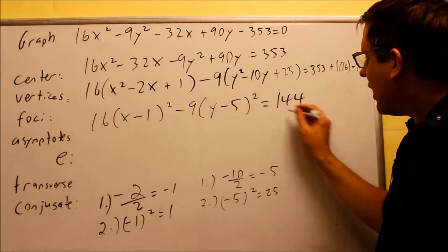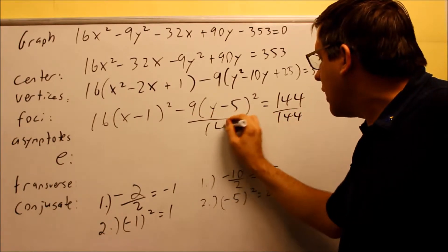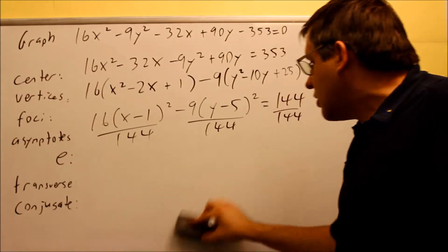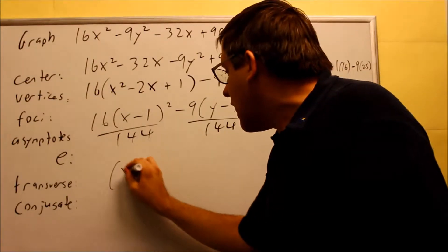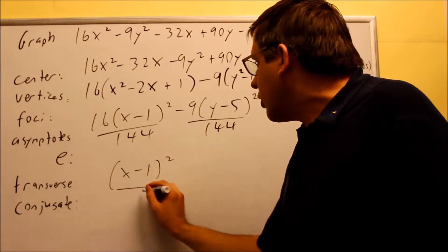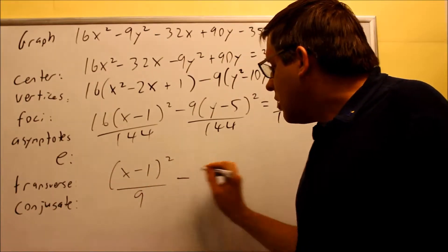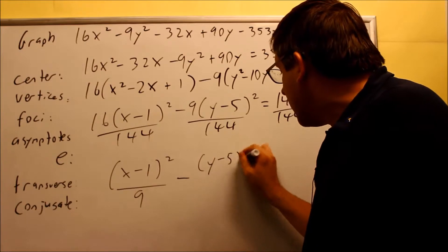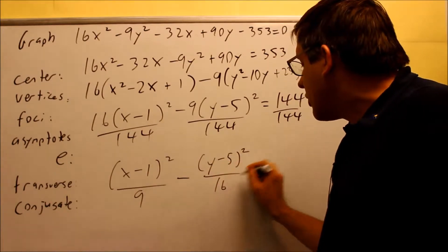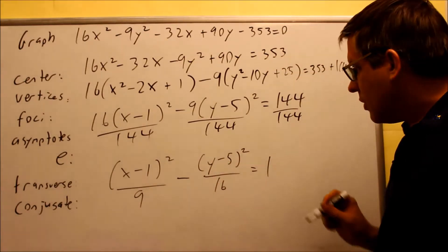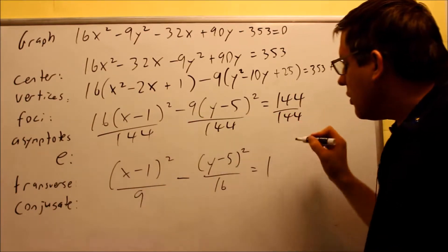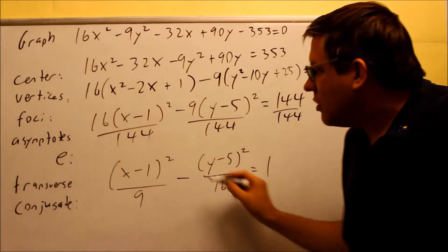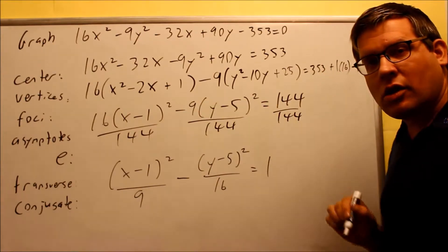The last thing is to divide everything by 144 to get it into proper form, then reduce the fractions. When we do that, we get (x minus 1) squared over 9, minus (y minus 5) squared over 16, equals 1. This is the actual equation we'll work with to answer the rest of the questions — we can't answer any of them until we have it in proper form.